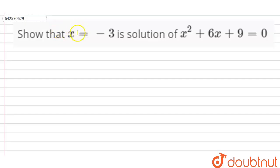So the question is show that x = -3 is a solution of x² + 6x + 9 = 0.